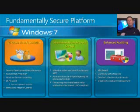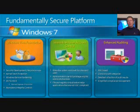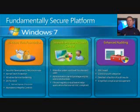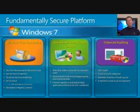Windows 7 is a fundamentally secure platform built upon the foundations we made in Windows Vista. The architectural changes and security enhancements around data execution prevention, address-based layout randomization, and kernel patch protection — and all the other security goodness we put into Windows Vista — we carry forward into the Windows 7 timeframe.